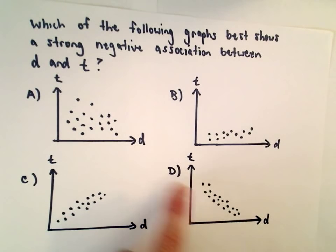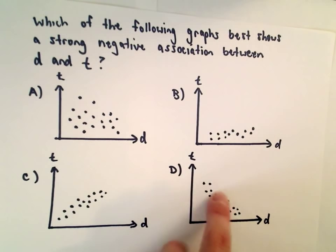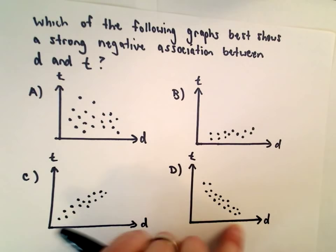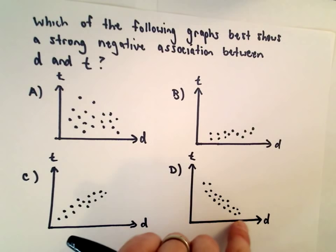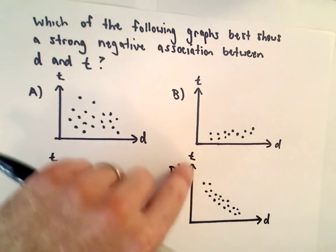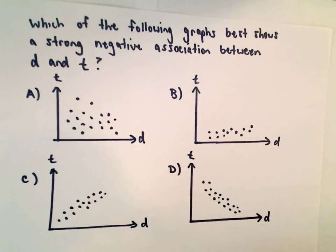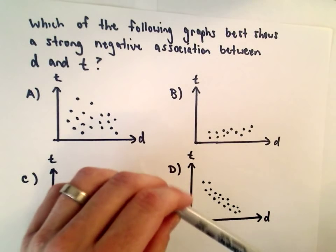Answer choice D would be the correct answer because the dots are all very close together. As the values on the horizontal axis, as the values of little D get bigger, the vertical axis T, those values are getting smaller and smaller. You can think if I tried to put a line through those dots.